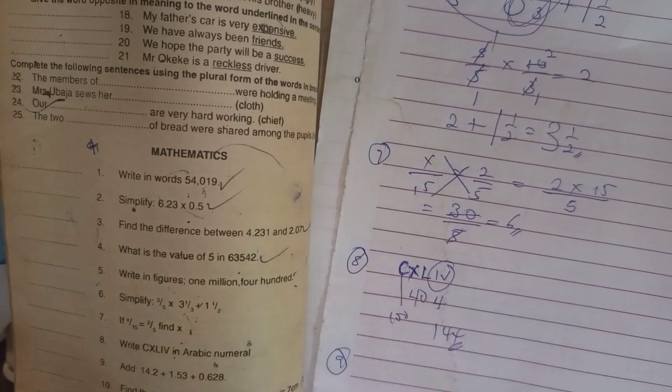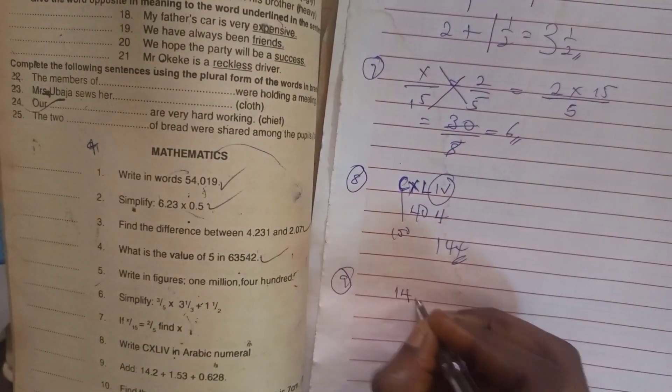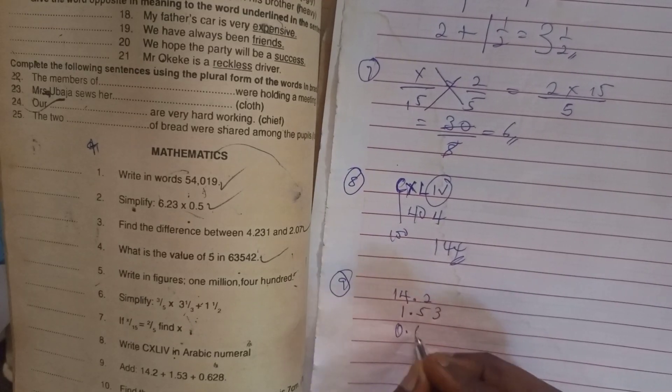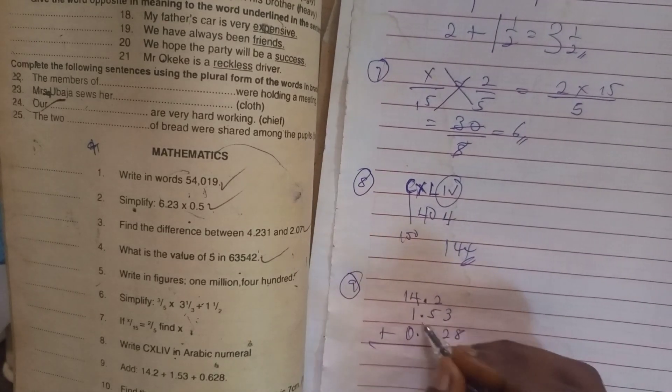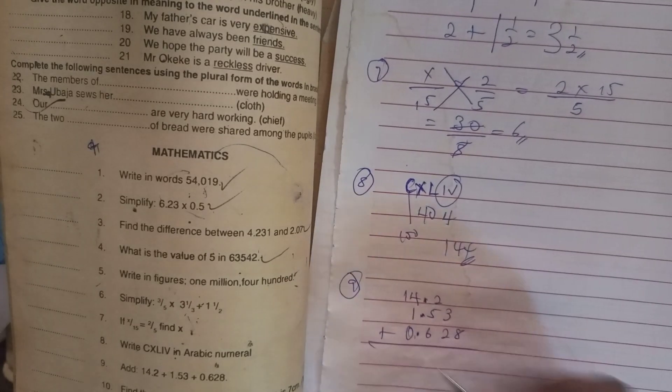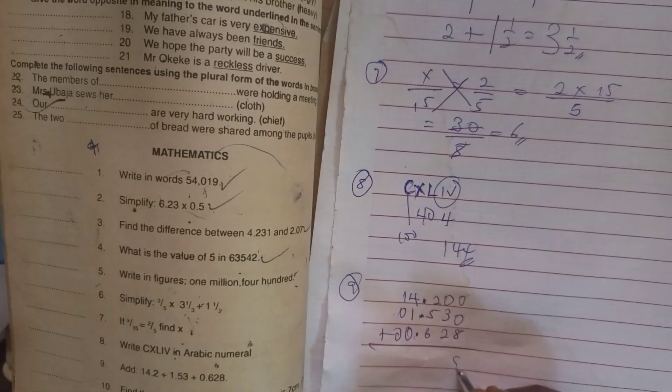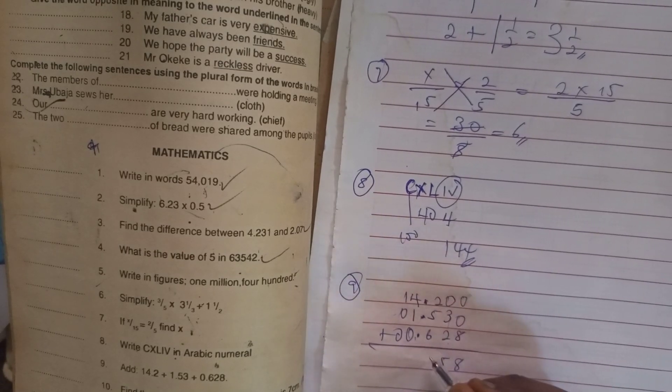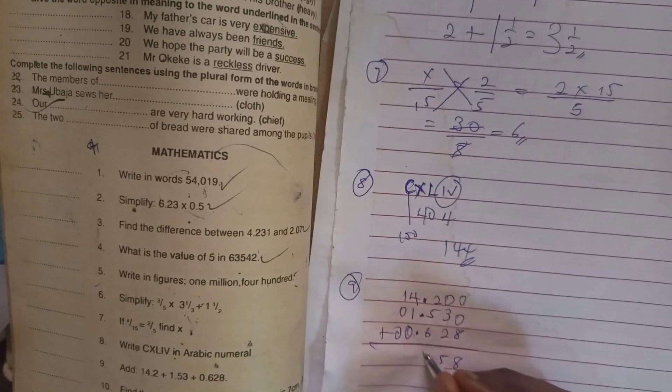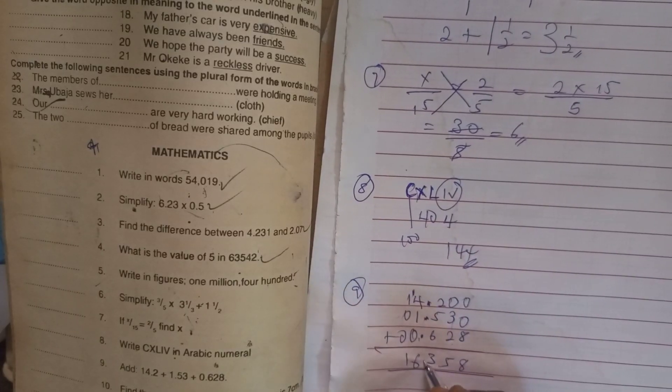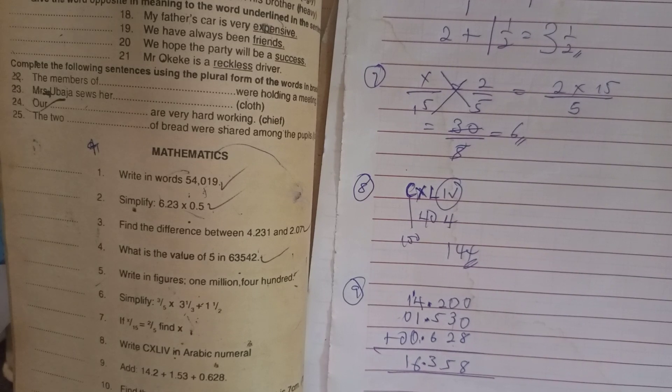Now number 9 is add 14.2 plus 1.53 plus 0.628. What we do is write our 14.2 first, 1.53 plus 0.628. We add them and make sure that the points are all in vertical line. Add your zeros. We write our 8. 3 plus 2 is 5. 2 plus 5 is 7 plus 6 is going to give us 13. Write 1 here. 1 and 4, 5 and 1. So that is 16.358. That is the answer.